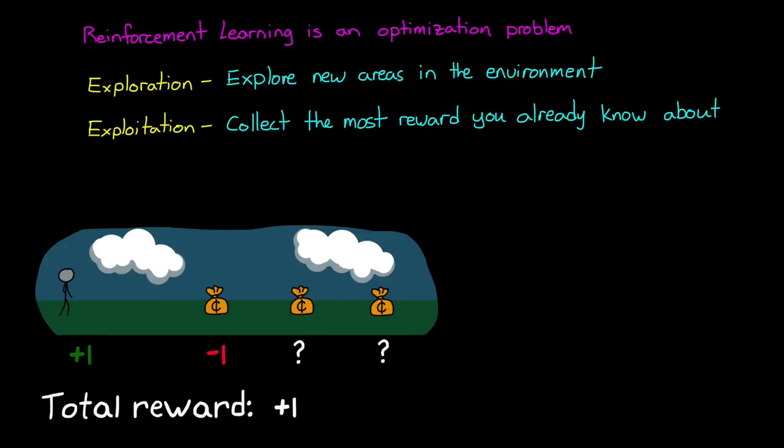However, if we occasionally let the agent explore the state space, even at the risk of collecting fewer rewards, it can fill out more of its value function, and it opens up the possibility of finding higher rewards that it didn't know about.